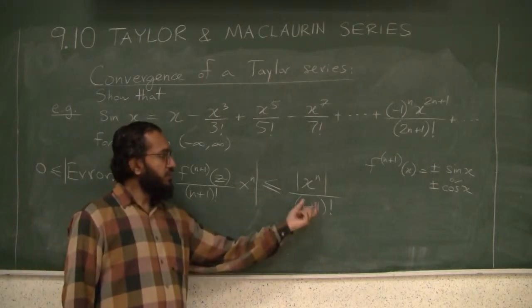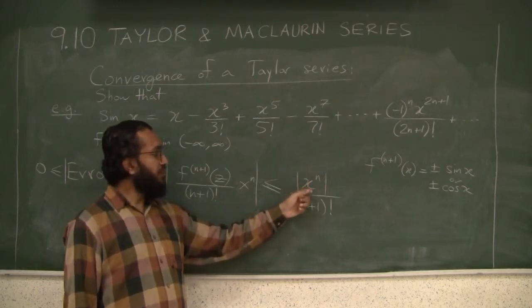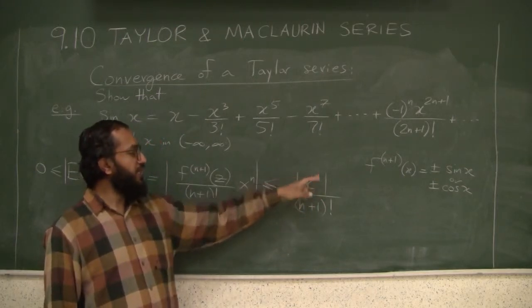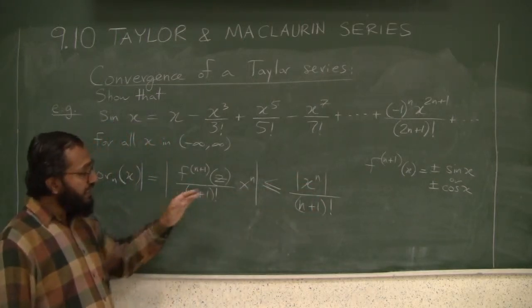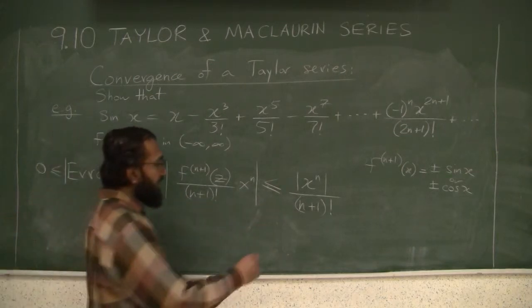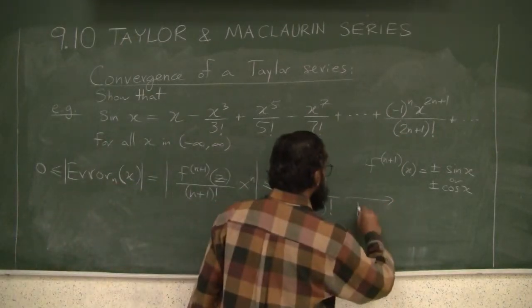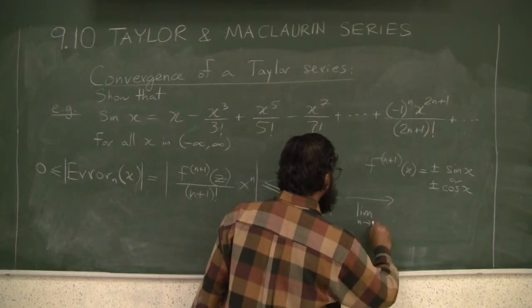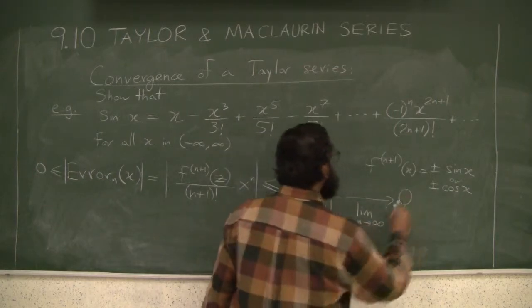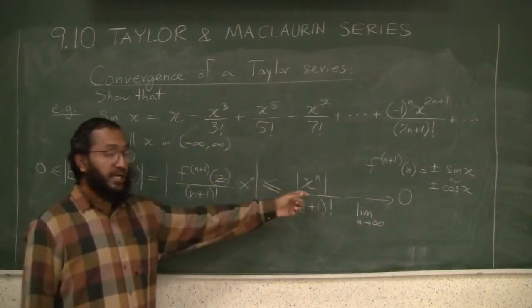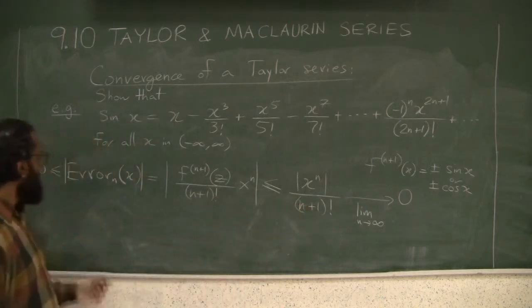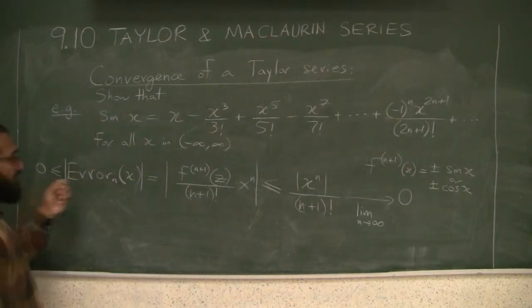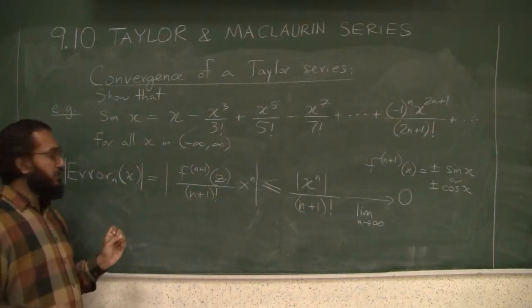Now, if I plug in the limit as n goes to infinity of |x|^n over (n+1) factorial, what's the limit of this as n goes to infinity? So the limit as n goes to infinity, this limit is 0. For any x, this limit is 0.